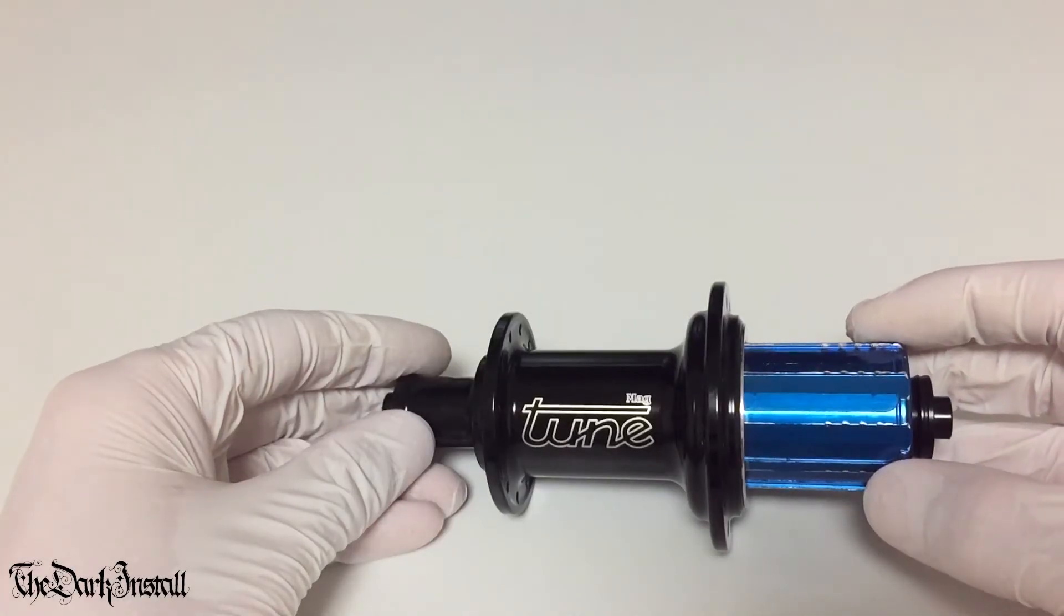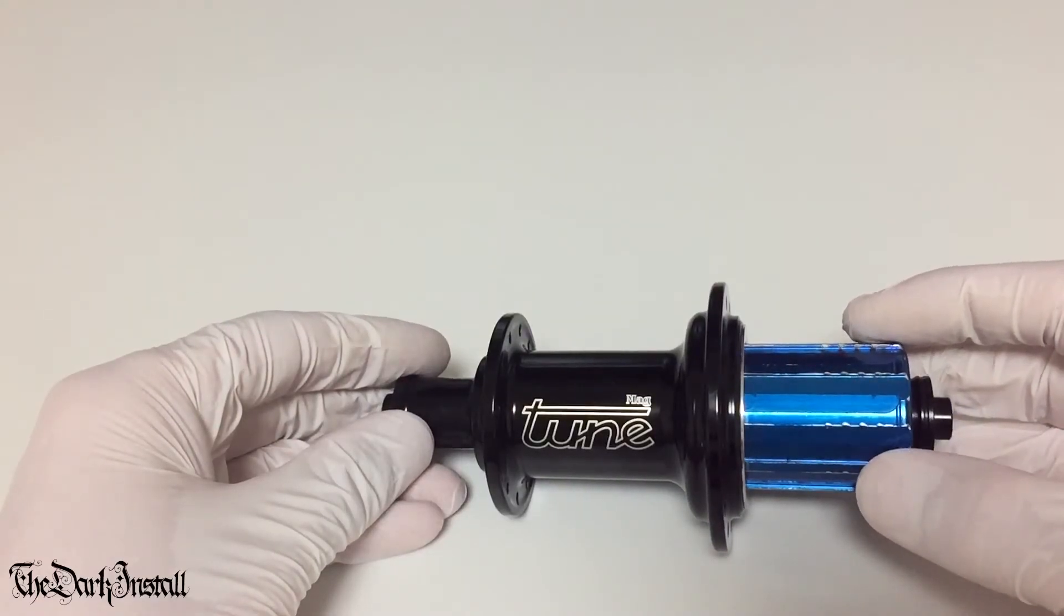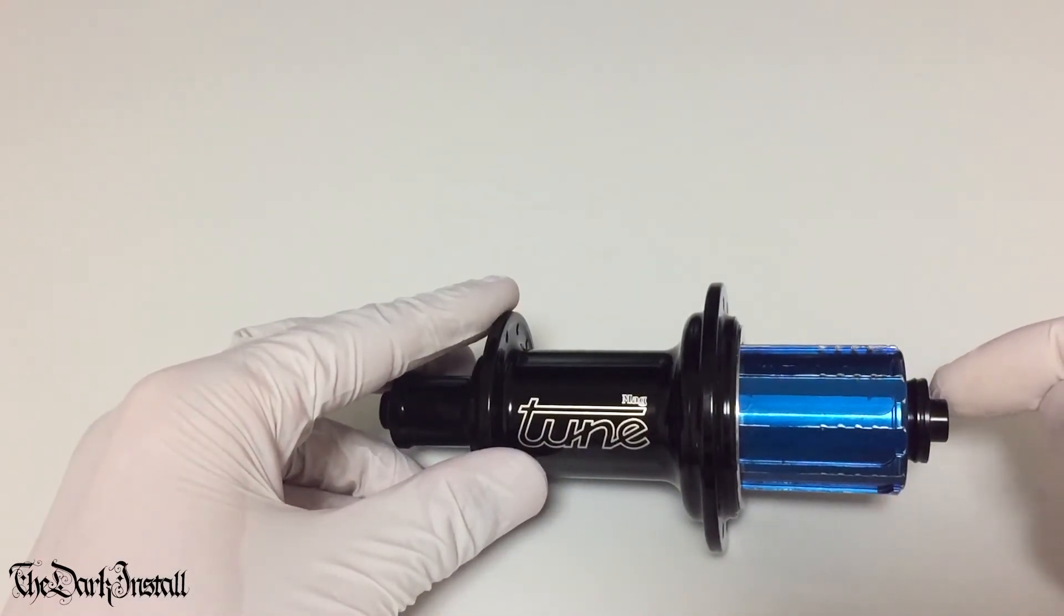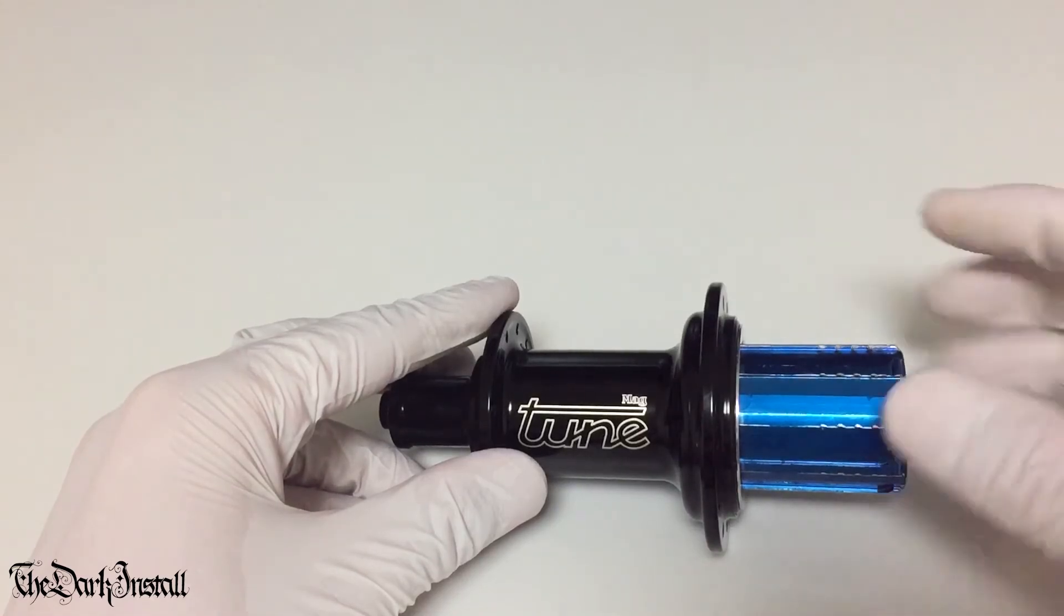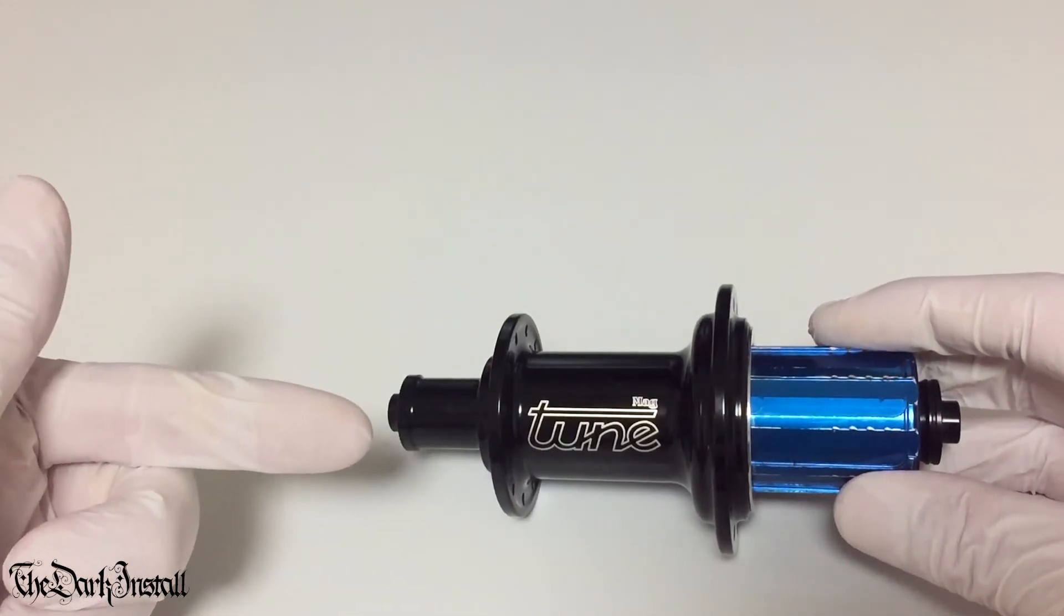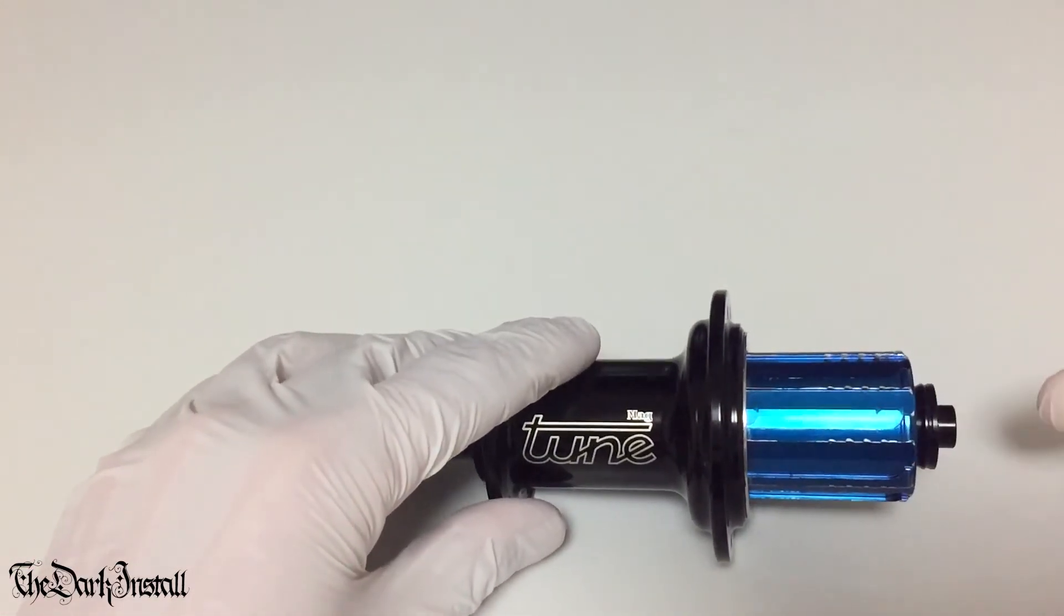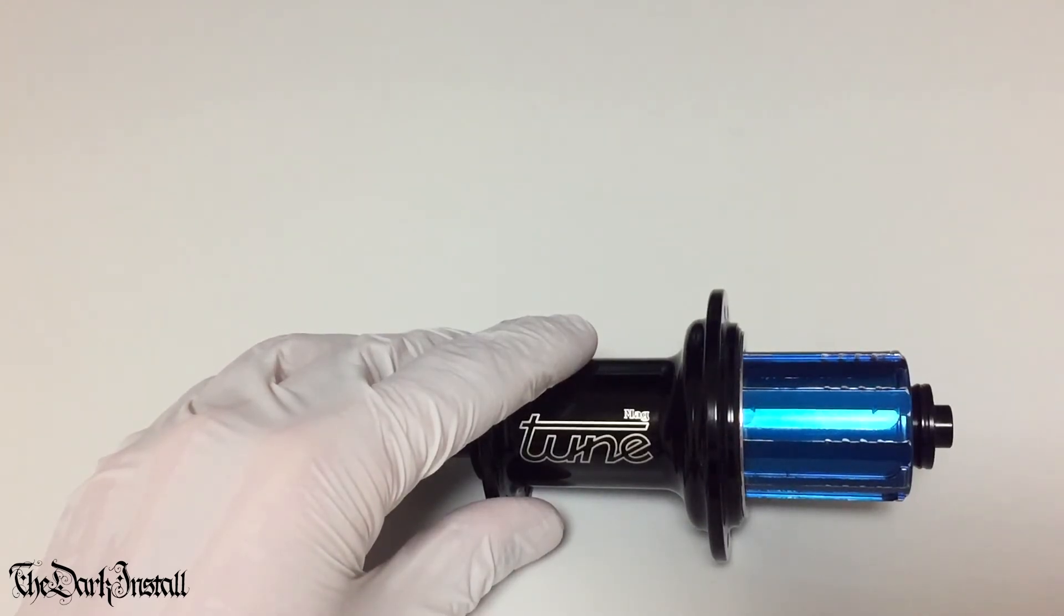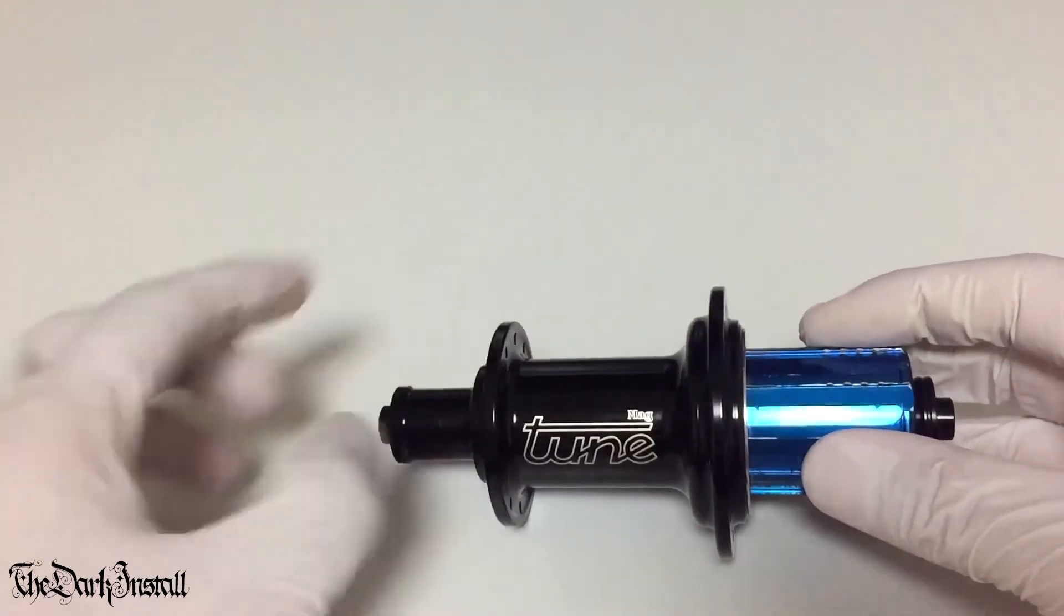Here's the hub then. It's a very simple process. What we're going to do is get this off, this drive side end cap, by tapping it through from this side.